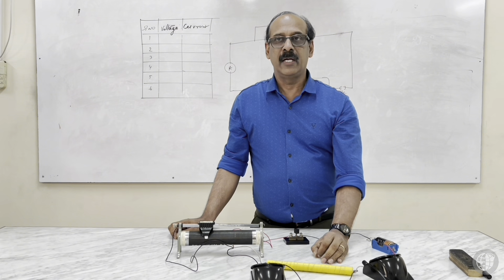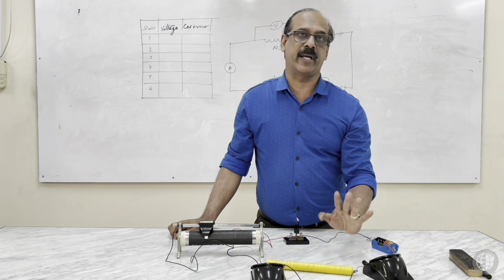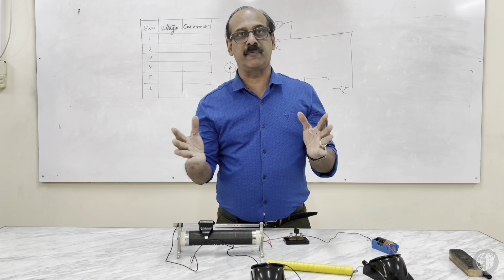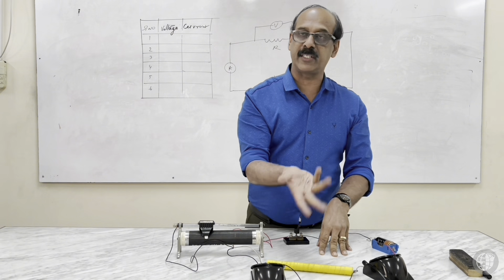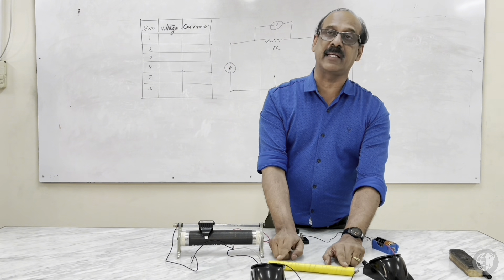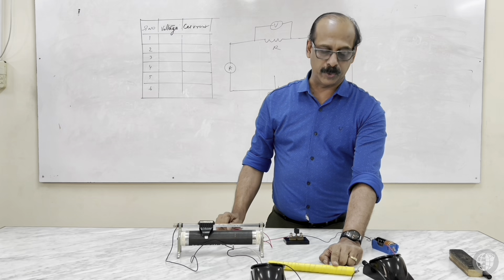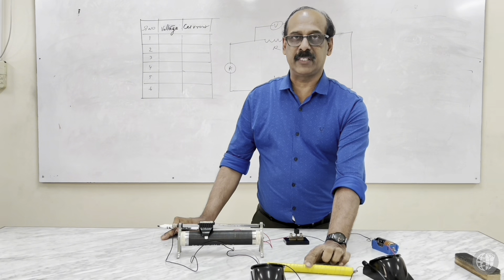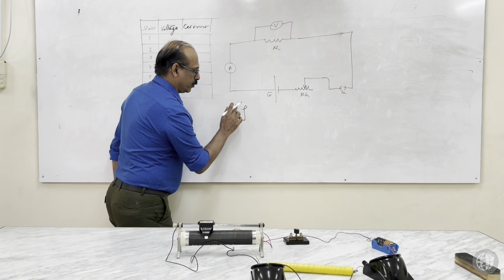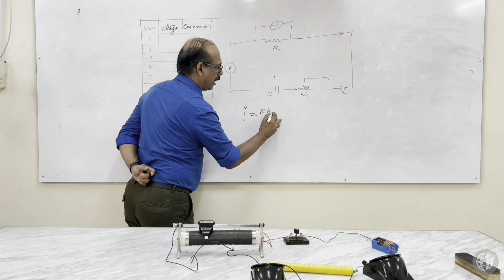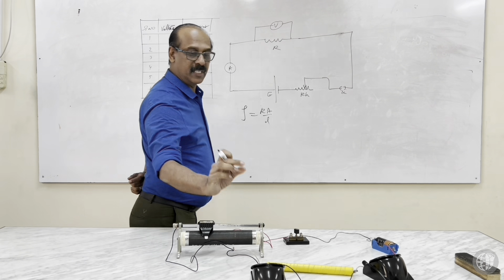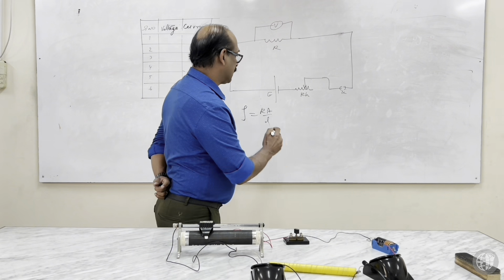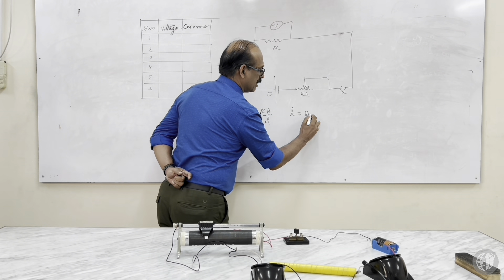There is a difference between resistance wire and connecting wires. Connecting wires are copper wires whose resistance is almost negligible and not considered. But manganin, nichrome, etc. have considerably high resistance values. To determine the resistivity of the wire, the formula is: rho is equal to R times A divided by L, where R is the resistance of the wire and L is the length.